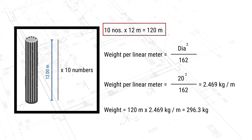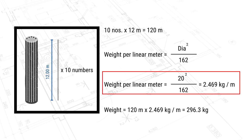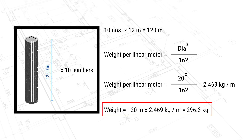To calculate steel reinforcement in general you need the total length and the weight per linear meter. There is a formula: weight per linear meter = diameter² ÷ 162. For the vertical bars with diameter 20 mm, that gives 20² ÷ 162 = 2.469 kg per linear meter. So 120 linear meters × 2.469 = 296.3 kilograms of vertical steel reinforcement.